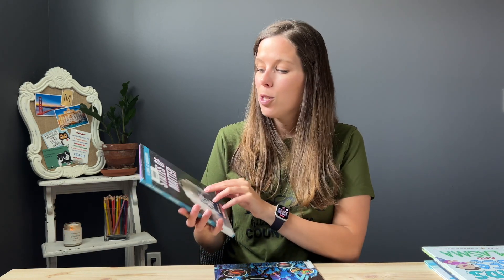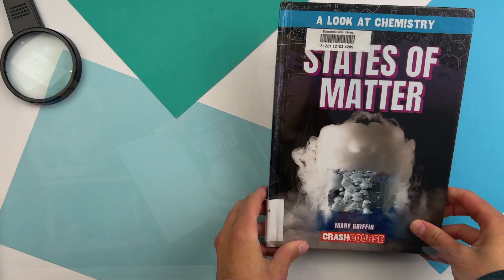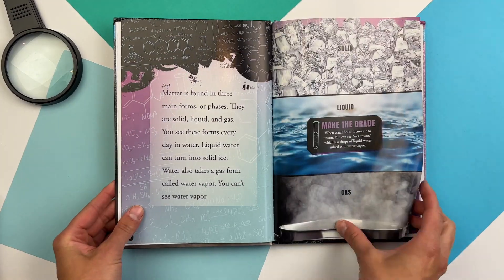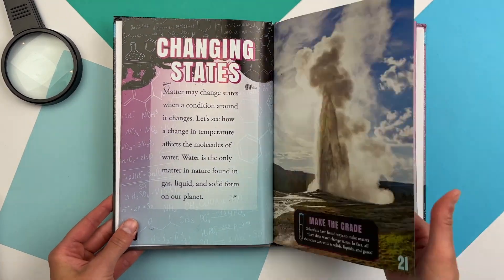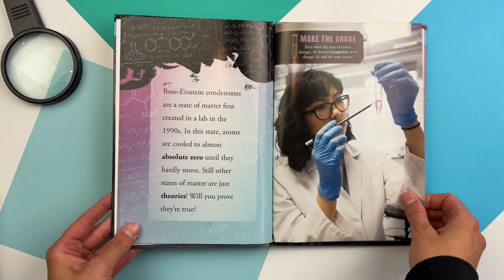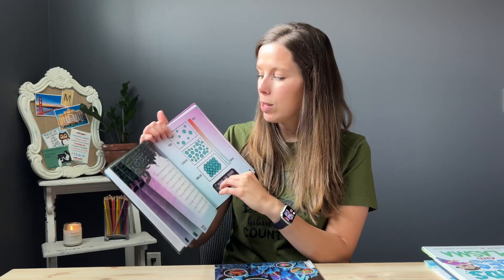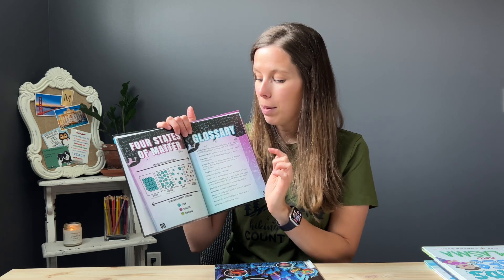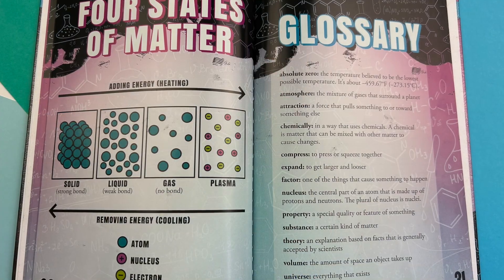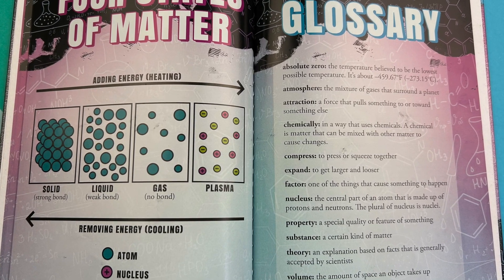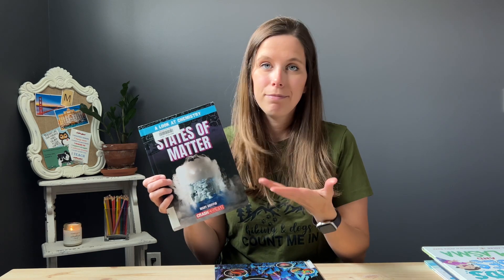Now these are the books that I have set aside — not for read alouds, but books I would have available in my classroom. Starting with my preferred book out of these two: A Look at Chemistry: States of Matter. This is an easy reader for students if they want to read a little bit more about the states of matter. I think the wording is appropriate for this age and it also has really good imagery. It gives very visual representations of gas, liquids and solids. They include plasma as well. I would use this in my classroom in case students had to research something. We can also use this book to talk about text features like glossary, table of contents, and things like that. I highly recommend States of Matter by Mary Griffin — I would definitely use this in my class.